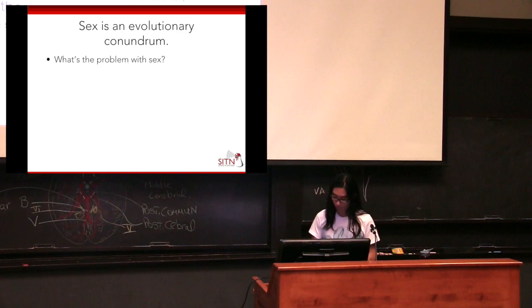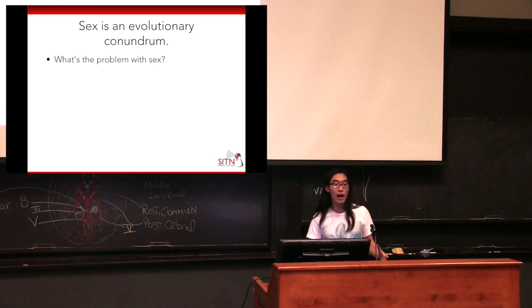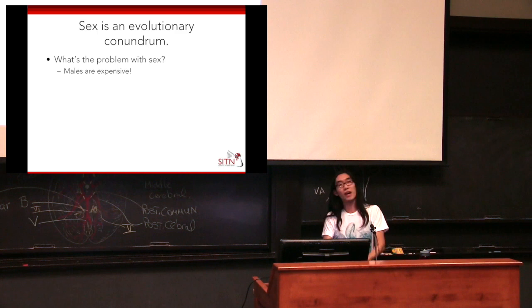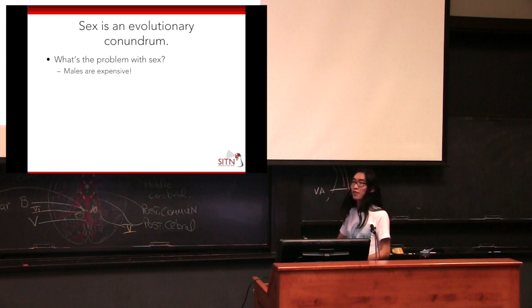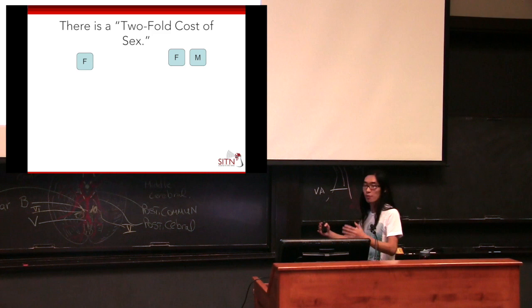Sex is an evolutionary conundrum. It's actually not trivial to explain why sex exists. The follow-up question is: what's the problem with sex? Why is there something to explain? The fact of the matter is males are expensive — males are kind of a waste in some sense. If you have a sexual system with males and females, there's something called a two-fold cost of sex.